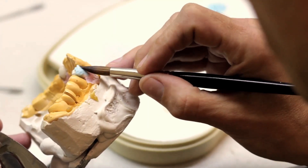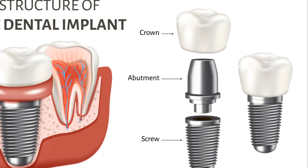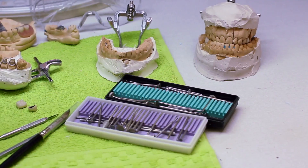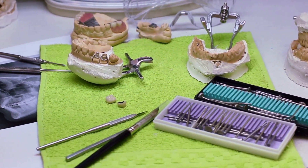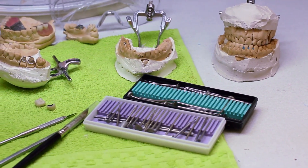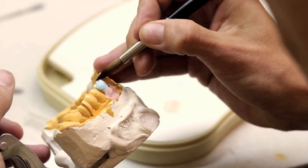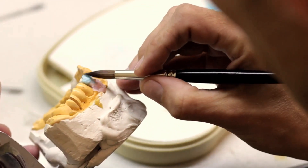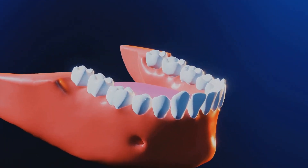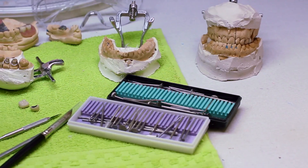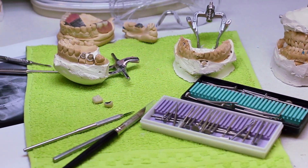Dental implants consist of three main components: the implant itself, the abutment, and the crown. The implant is the titanium post that fuses with the jawbone, providing secure support for new teeth — like a solid foundation for a house. The abutment is a connector placed on top of the implant to connect it to the replacement tooth. Finally, the crown or prosthetic tooth is the visible part, usually made of zirconium or porcelain for durability and good looks.